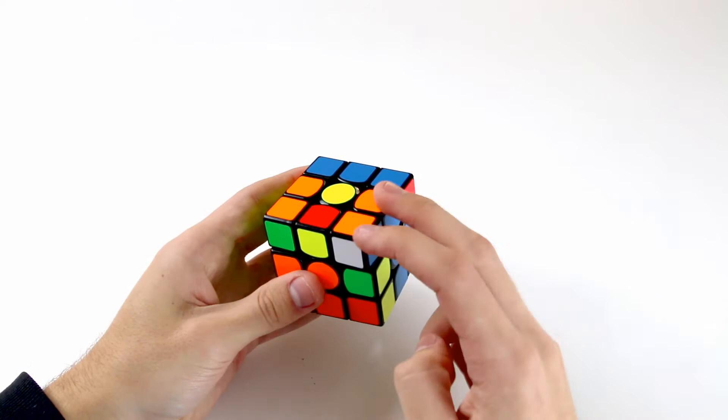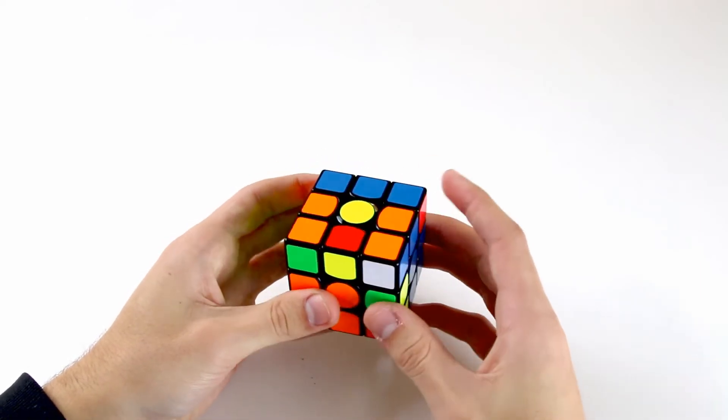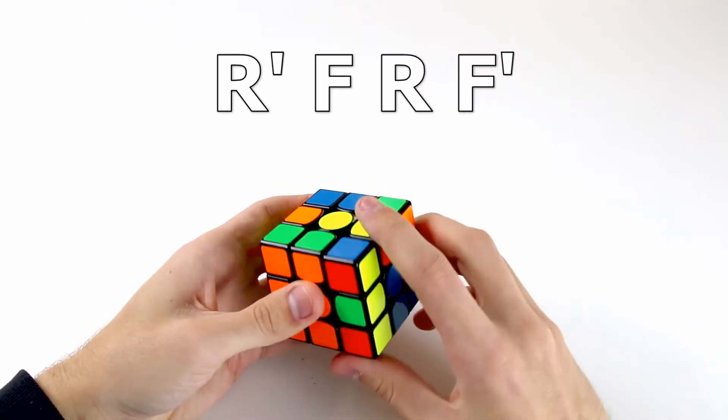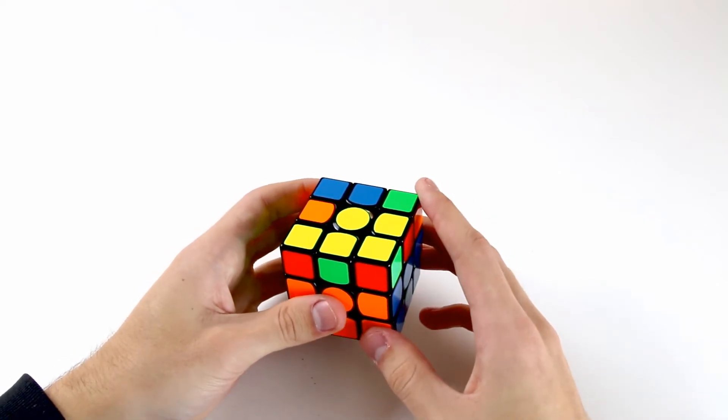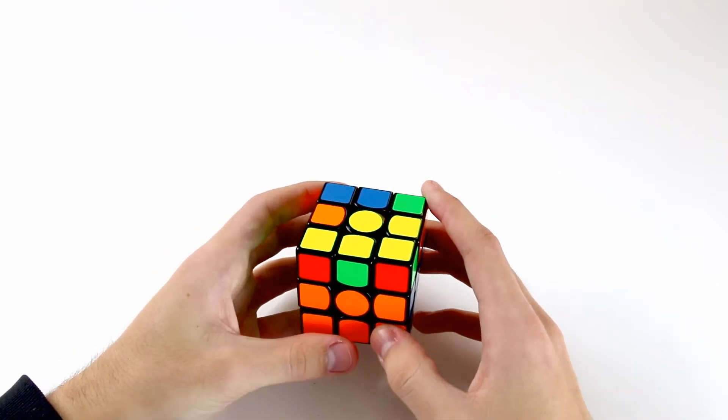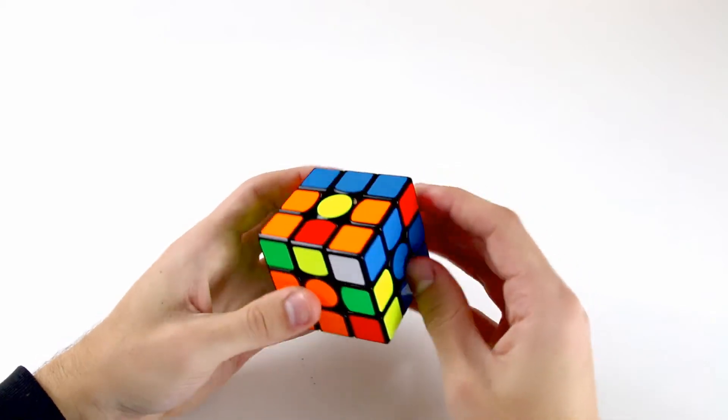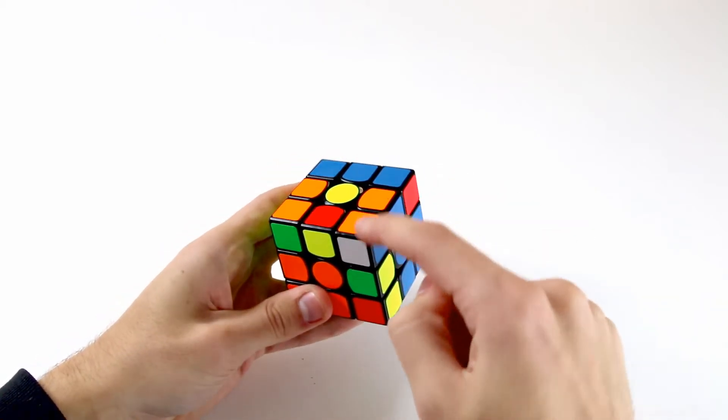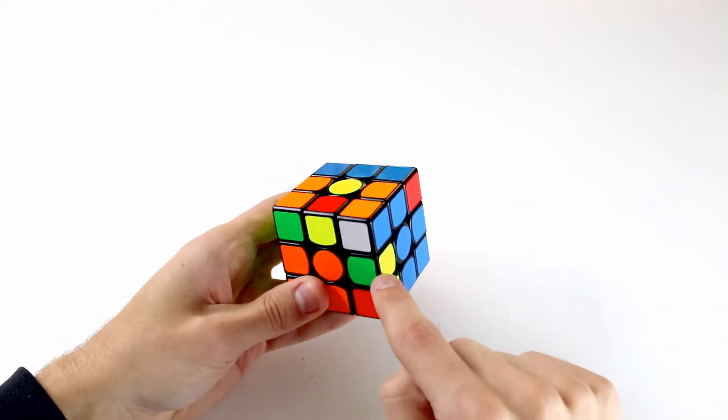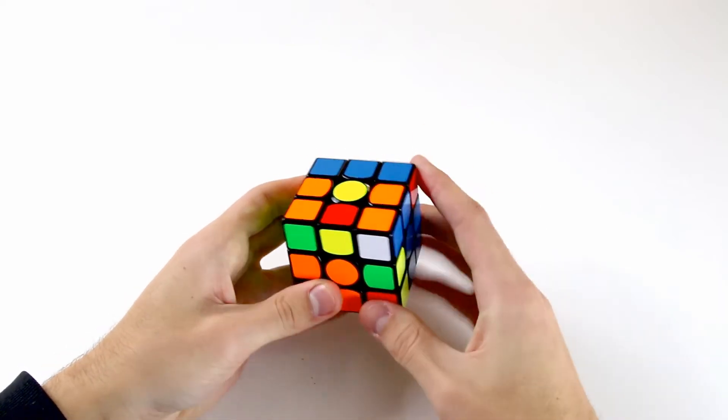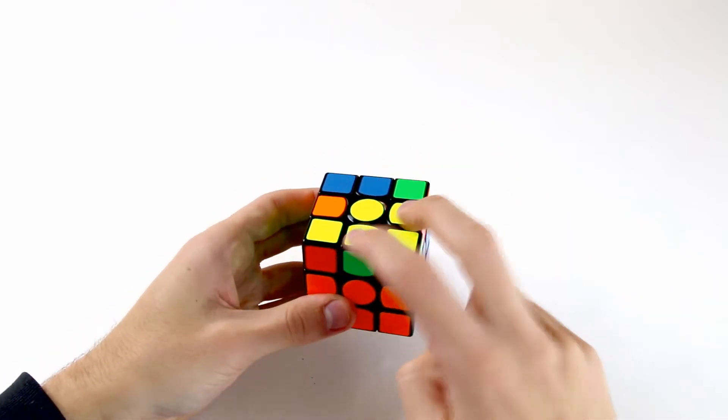However another way we can insert this F2L pair is by doing R', F, R, F', like that and that actually changes the orientation of two edges. So reversing that we can see that doing R', F, R, F' inserts this F2L pair into the front right slot and orients this edge and this edge, like so.